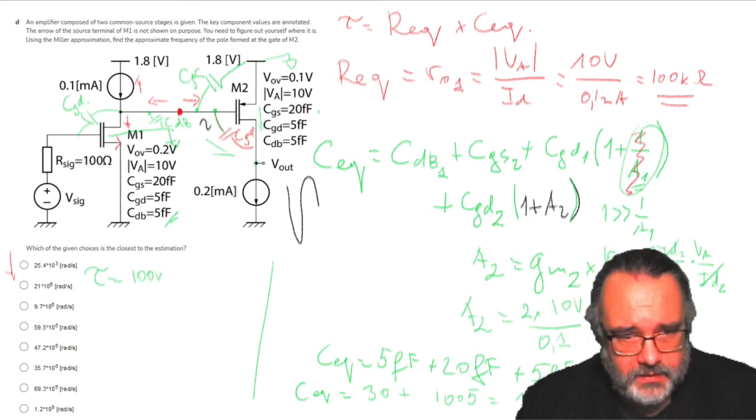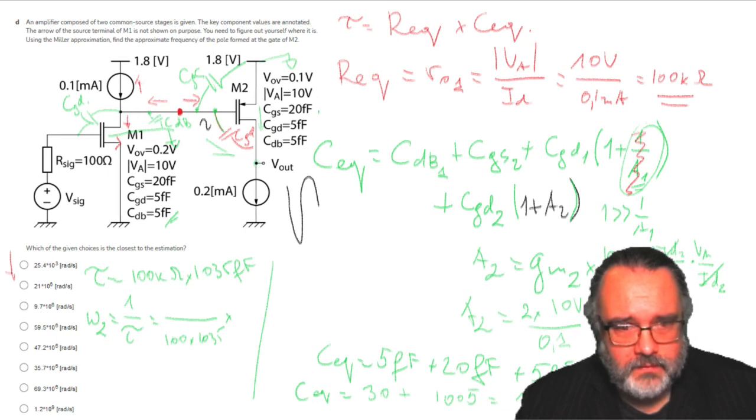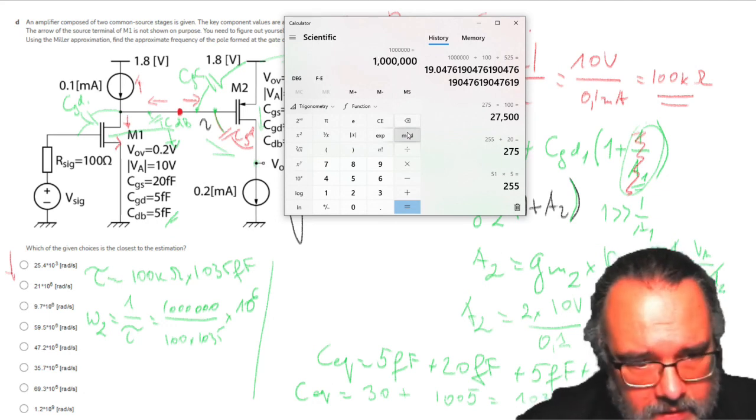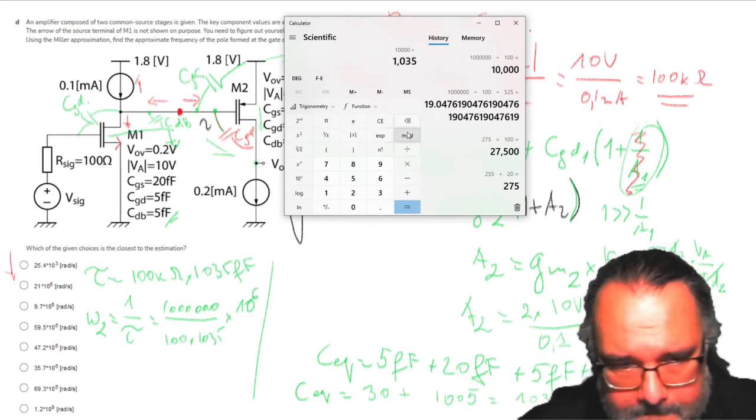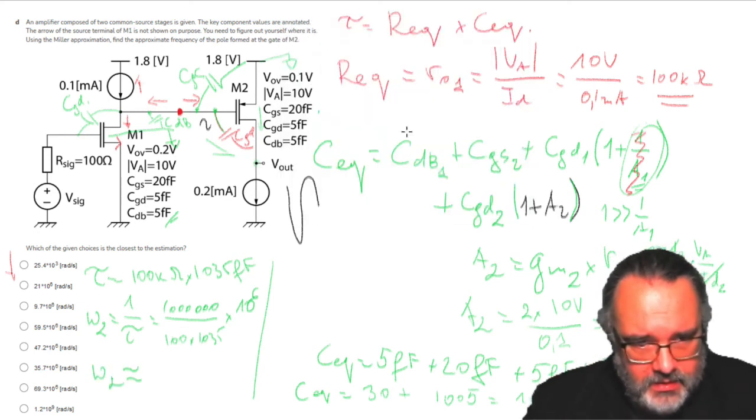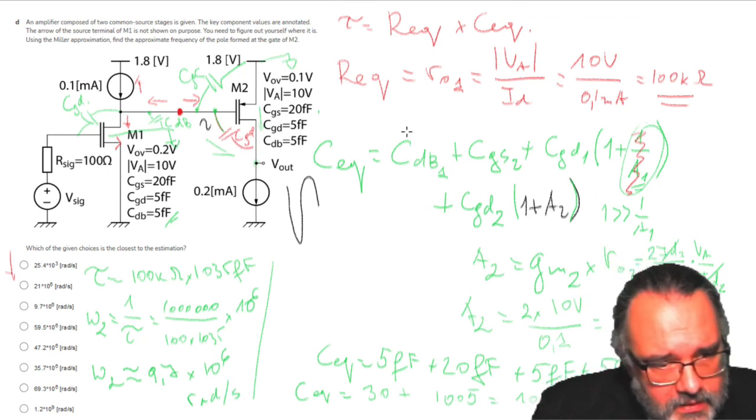Now I can calculate the time constant, which will be 100 kilo ohms times 1035 femtofarads. The pole will be 1 over tau, which is 1 divided by 100 times 10 to the 3 times 1035 times 10 to the minus 15. This is 1 million divided by 103.5, which gives approximately 9.66 mega radians per second, close to 9.7 times 10 to the 6 radians per second.